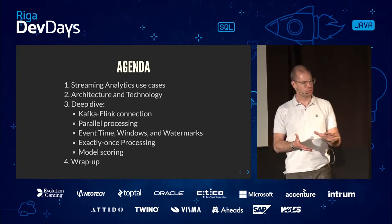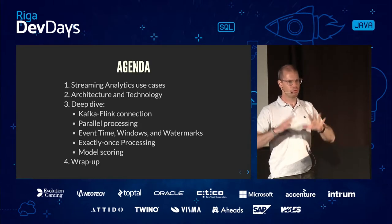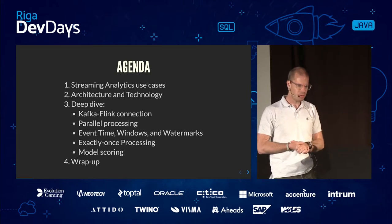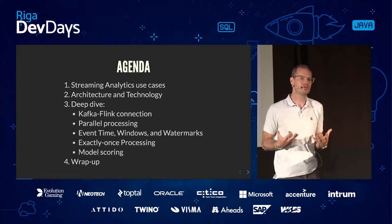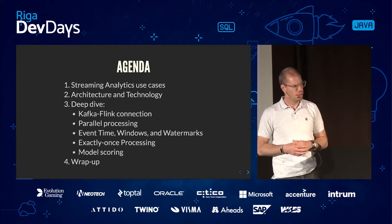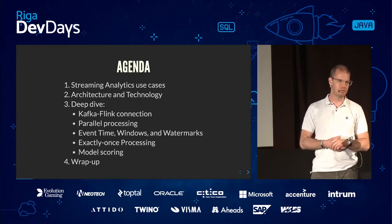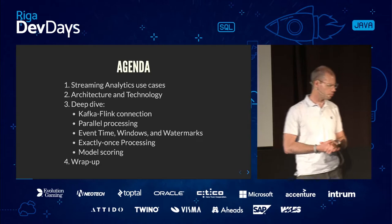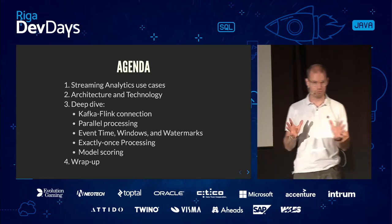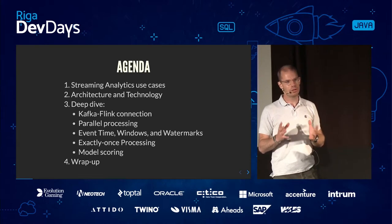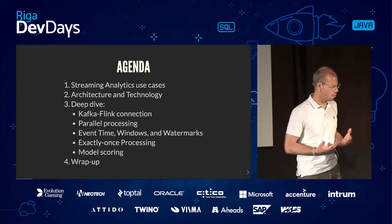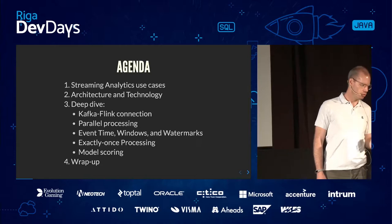What I want to do today: first, a broad context — sketch the area we're in with some use cases. Then we look at the architecture and technology of the system we designed at ING. Then we do a deep dive into subjects like parallel processing, event times, windows, and watermarks. There's not enough time to cover everything, but I hope you leave with an overview of the challenges when working with this kind of data and technology.